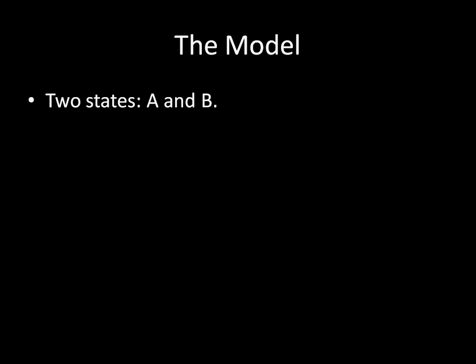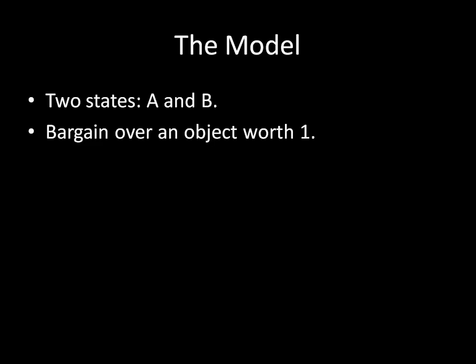Now, remember, the model from last time had two states, A and B. We're going to look at it as though these two states are bargaining over a strip of territory. On the left end, we have A's capital. On the right end, we have B's capital. A wants to draw the border as close to B's capital as possible, because that gives more land to A. And B wants the opposite — B wants to draw the border as close to A's capital as possible because that gives B more of the territory. The bargaining object was worth one, so we can draw this as a number line. On the left end of the number line we have zero, and on the right end we have one. So A's capital appears on zero and B's capital appears on one.